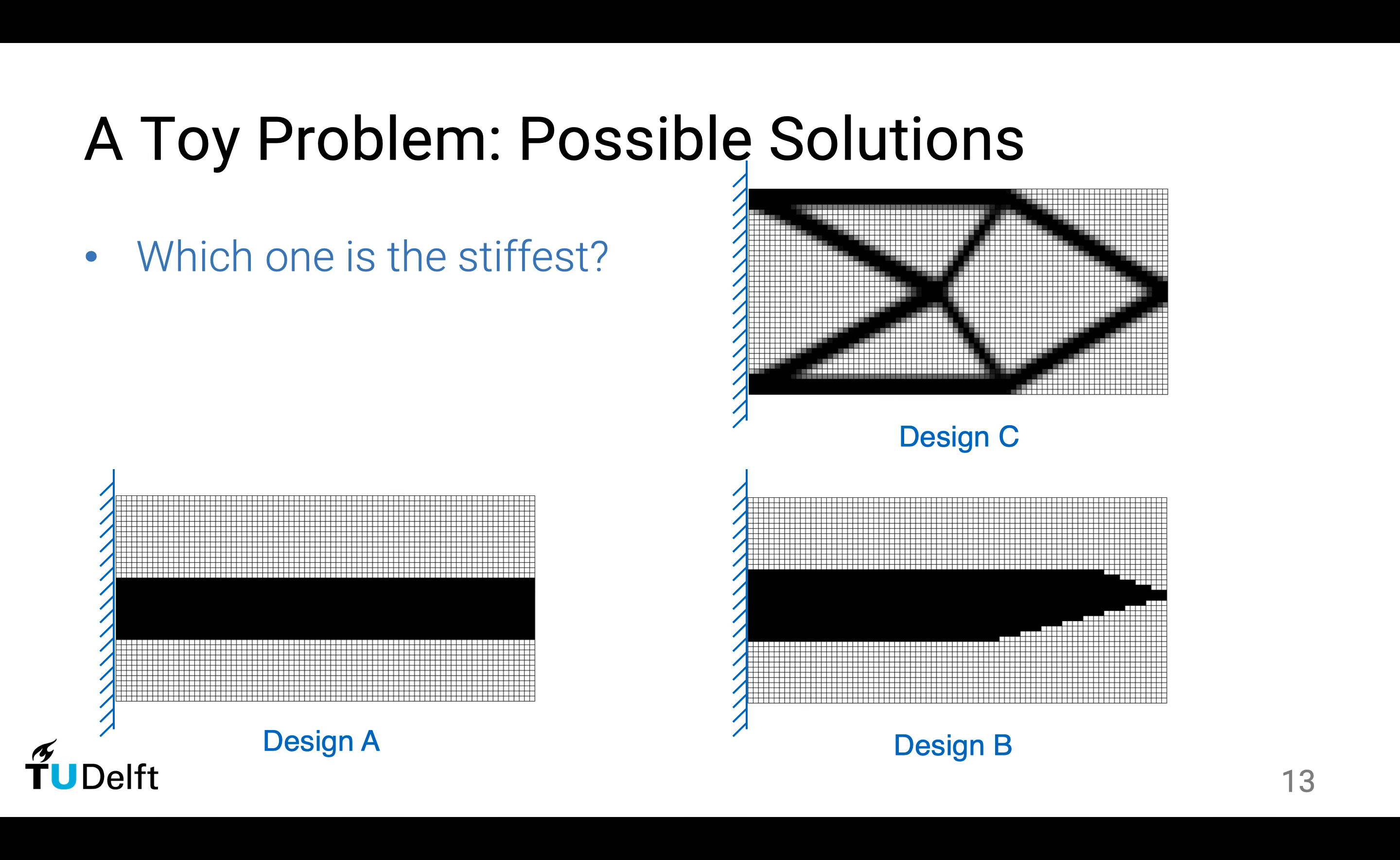If we increase the resolution to make a continuum structure, it looks something like this. Now, think about it. If a force is applied pointing downwards on the right-hand side, which structure has the smallest deformation, or which structure is the stiffest?